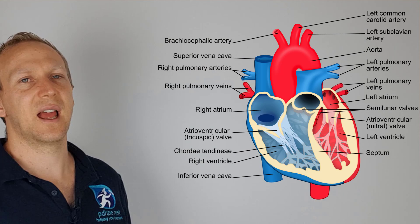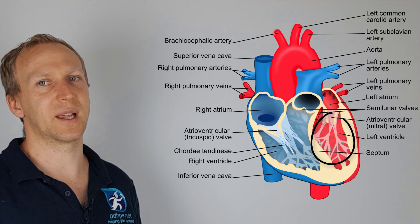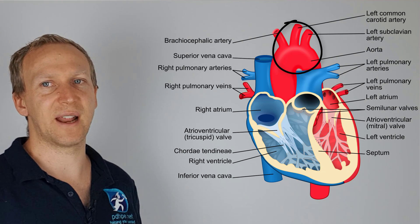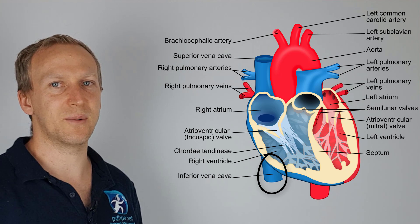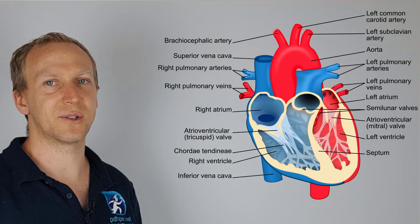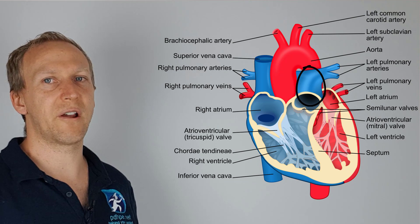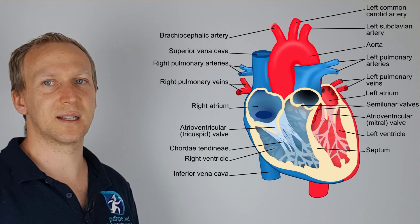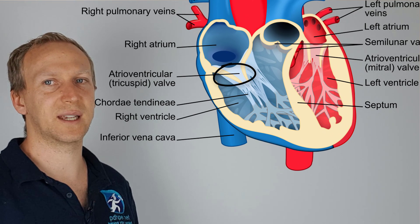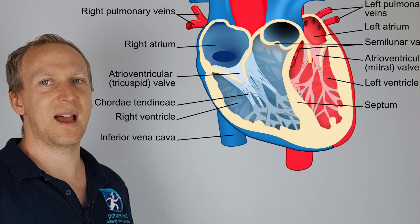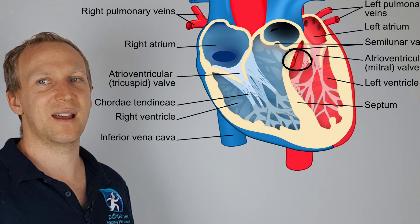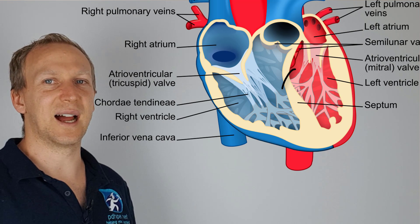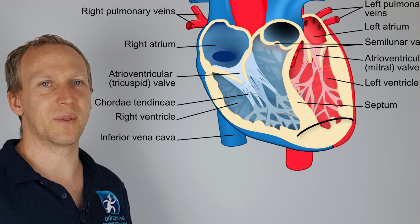Now let's look at the structure of the heart. We have a left and a right atrium, which flow down into a left and a right ventricle. At the top is the aorta. We have a superior and an inferior vena cava, which join before entering the right atrium. There is a pulmonary artery taking blood to the lungs and a pulmonary vein bringing blood back. We also have a tricuspid valve and a mitral or bicuspid valve.